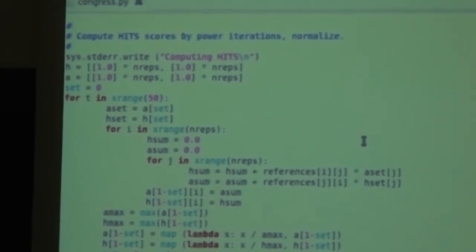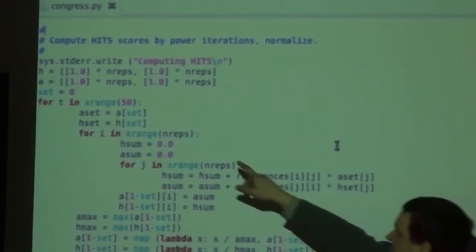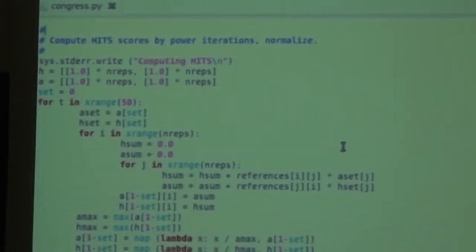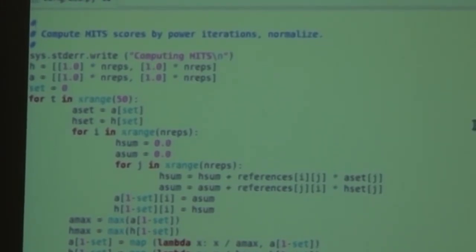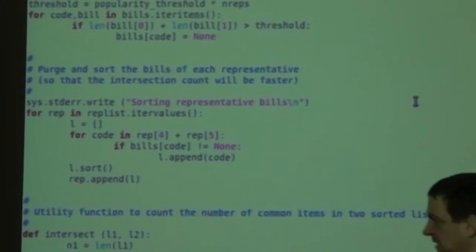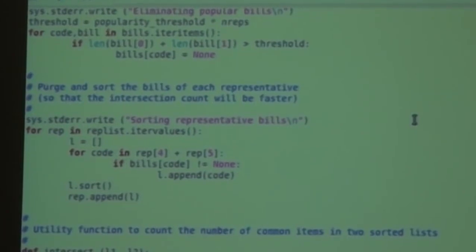Same for the HITS scores. In this case, I maintain two different versions of the vectors H and A. Once I have done this, I have vectors that represent the PageRank score, HITS score, and authority score of every representative.